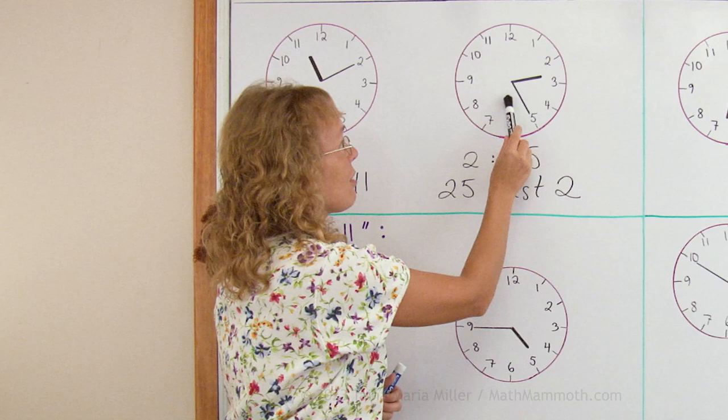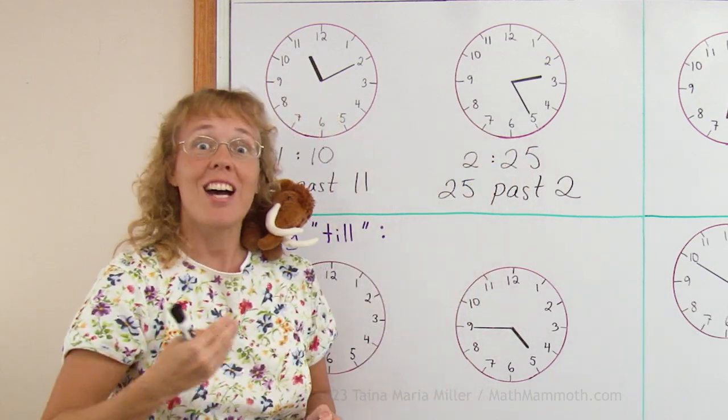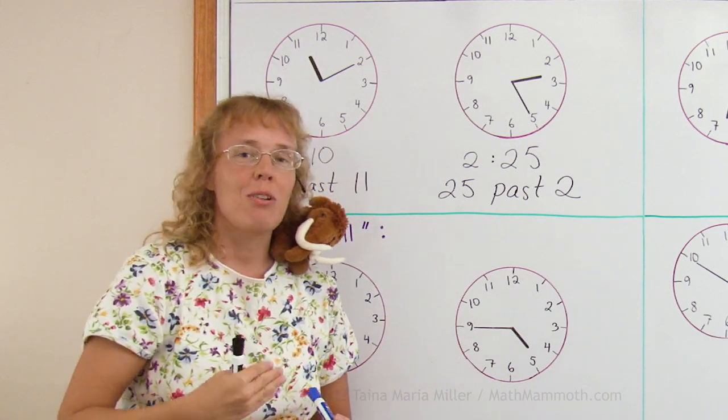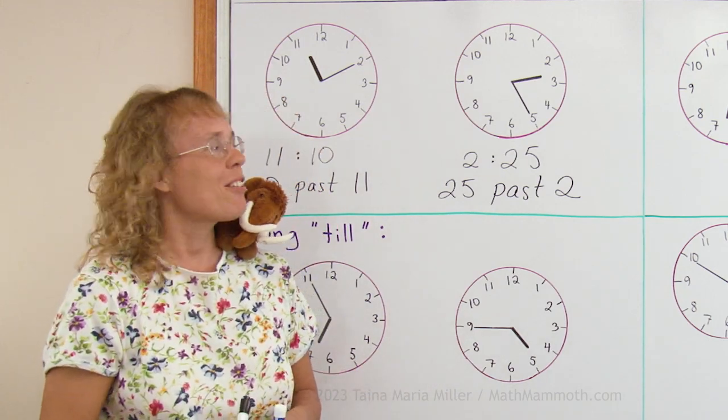up to when it is right here, pointing straight down, which is the half past. The half past actually is 30 minutes past the whole hour, but we will say it as half past the whole hour.